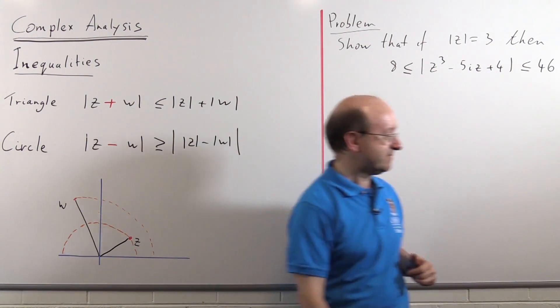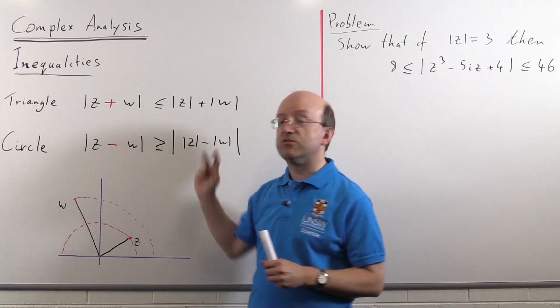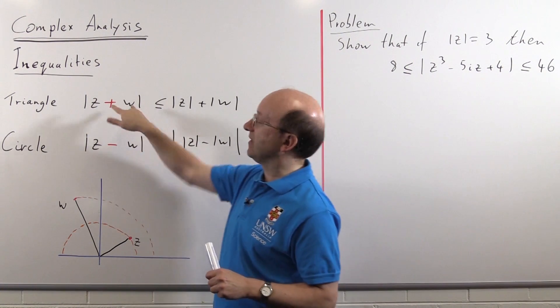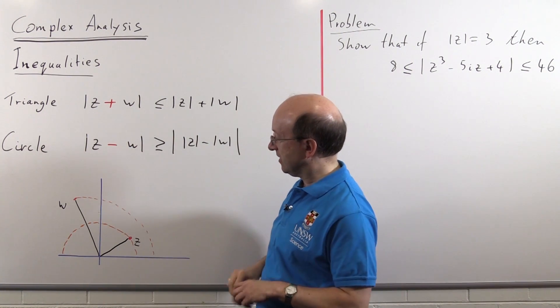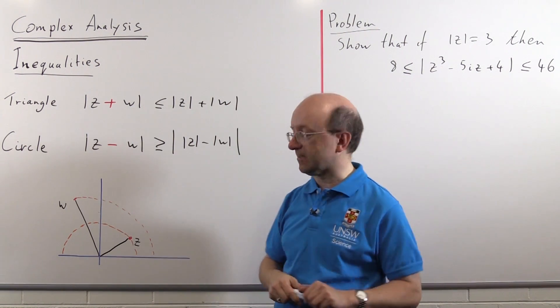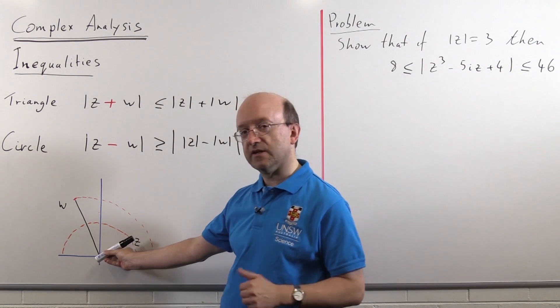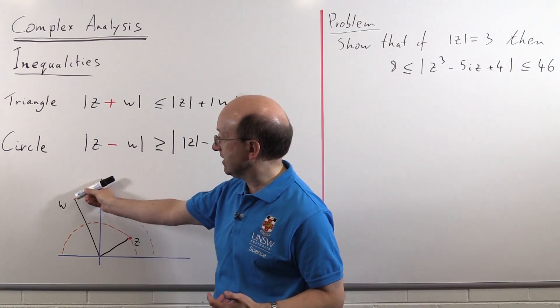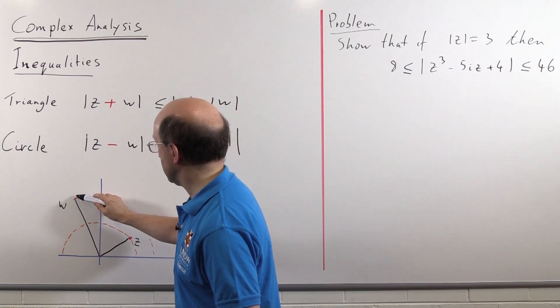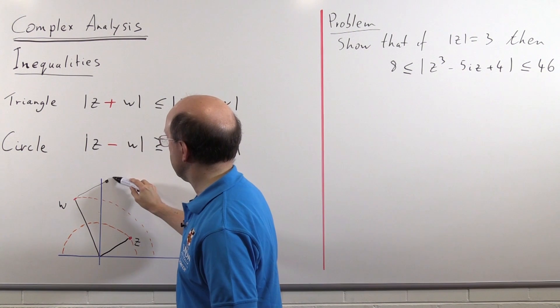Now geometrically, how to spot what's going on here, z plus w, if you remember when you add complex numbers you're really adding vectors. So on the diagram down here, if that's z and that's w on the argand plane, to add z and w you would take mod z here, translate it up to w and you would find mod of z plus w would be, well it would be somewhere around here.